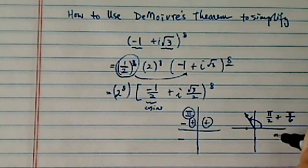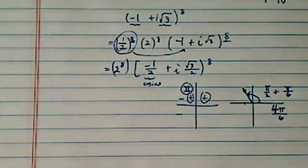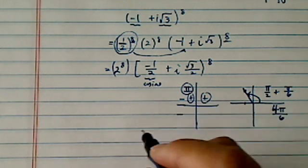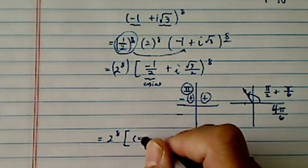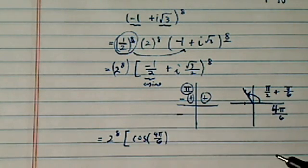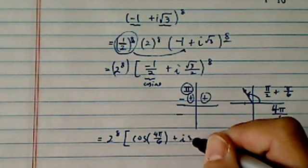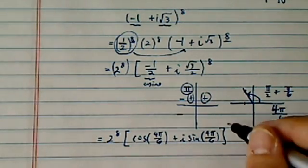So basically I have a 7 pi over 3, 4. I have a 4 pi over 6. Okay, so let's get started. You go to 2 to the eighth. Cosine 4 pi over 6 plus i sine 4 pi over 6 to the eighth.